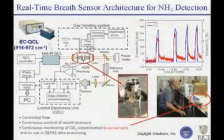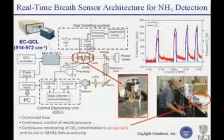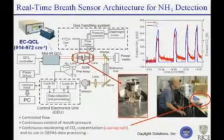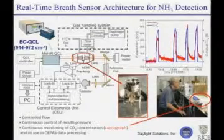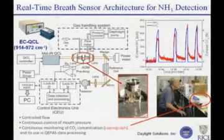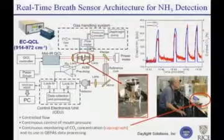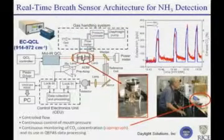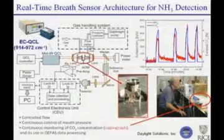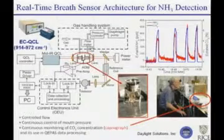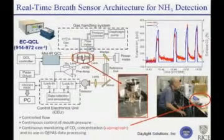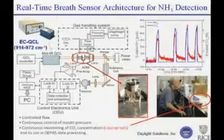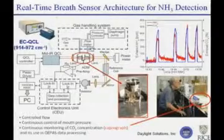This is the work of a breath sensor — this is the group of Frank Tittel and Bob Curl. In fact, I think that's Bob Curl himself testing this breath analysis. You have to realize that in human breath there are about 400 trace gases, so you want a technique that is very sensitive. This is basically photoacoustic spectroscopy using a T-cell — this is the box from Daylight Solutions that I mentioned before, an external cavity QC laser.